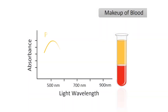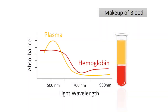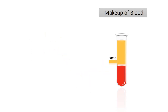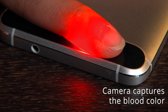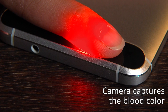HemaApp takes advantage of the absorption properties of the blood at different wavelengths of light. The blood consists of about half water and half red blood cells. Depending on the amount of red blood cells that are present, the color of the blood changes. Using a phone's camera, this change in blood color is captured.